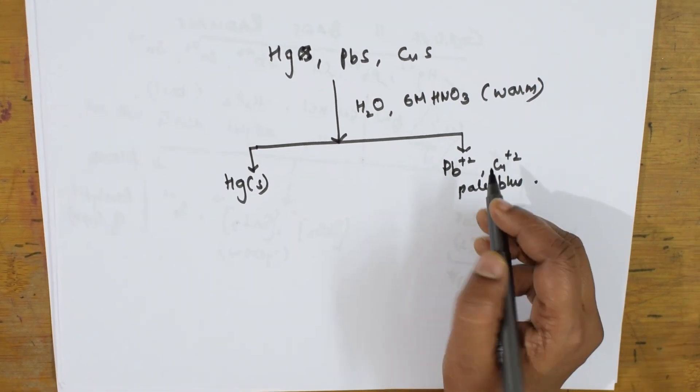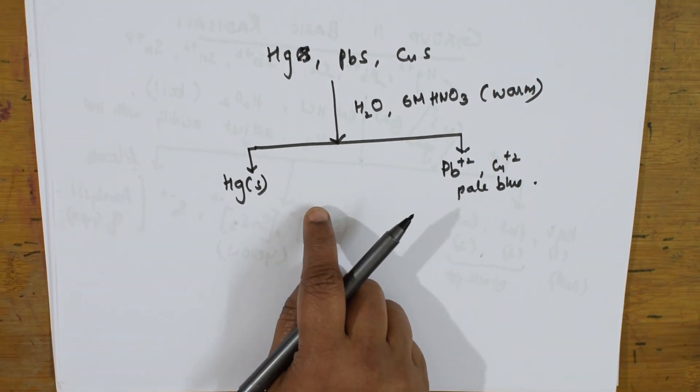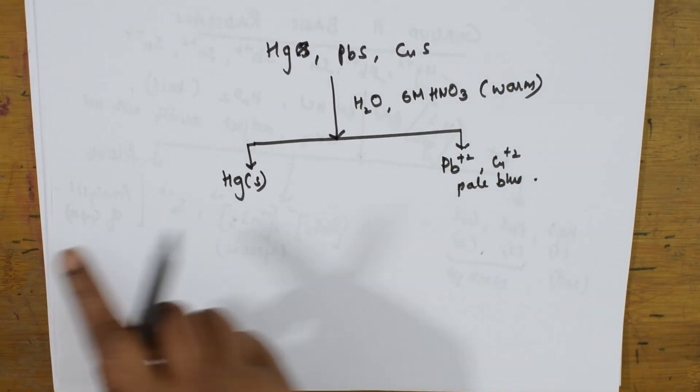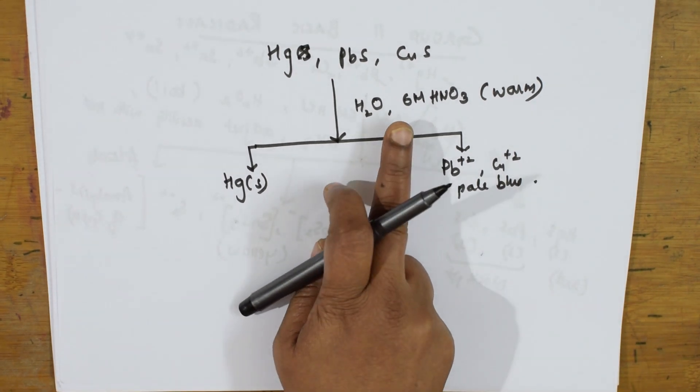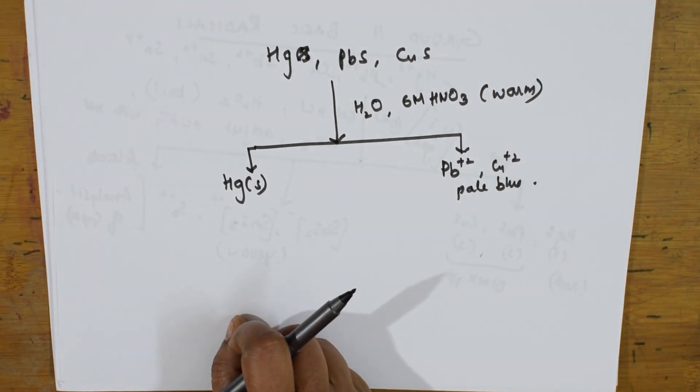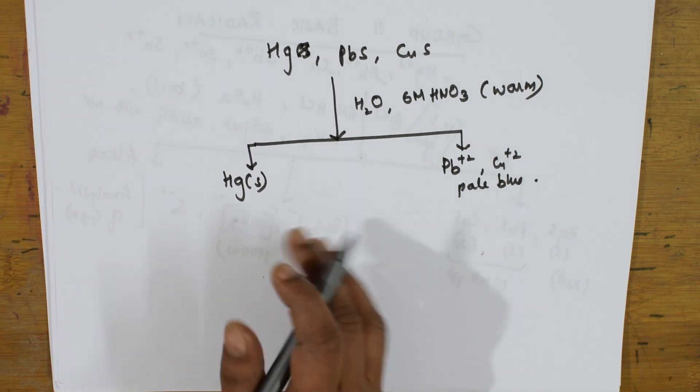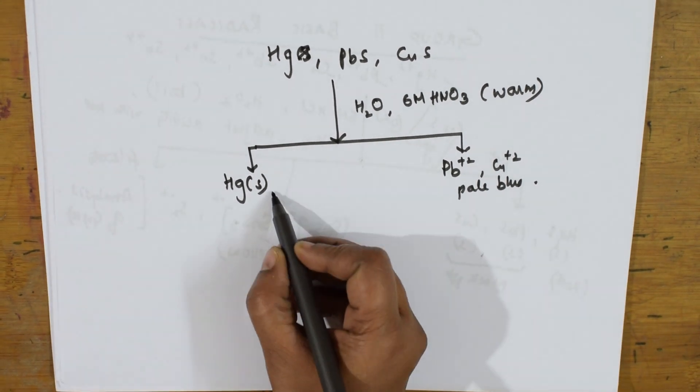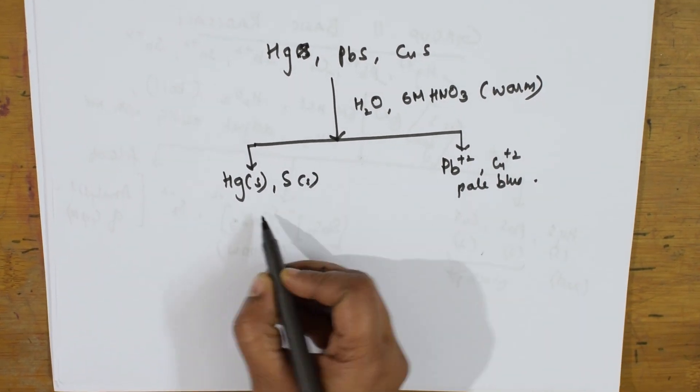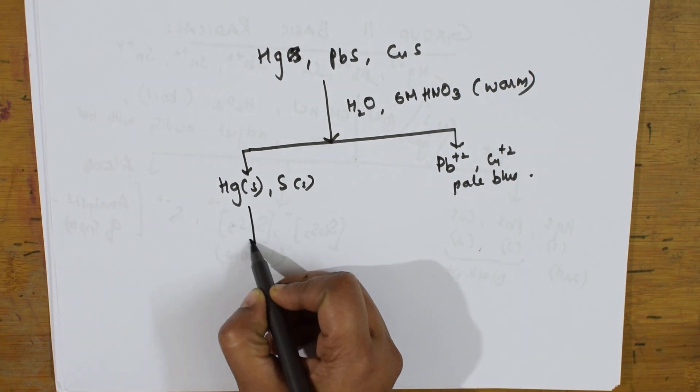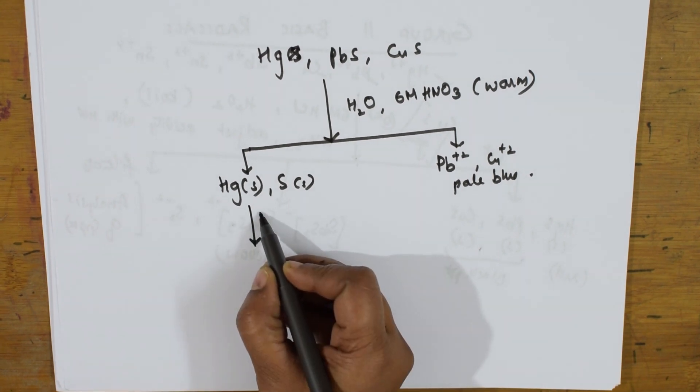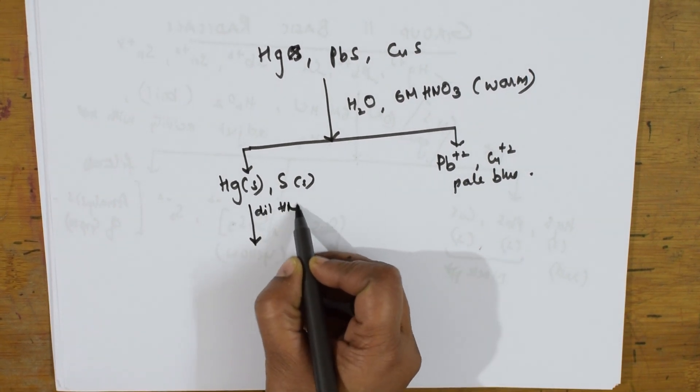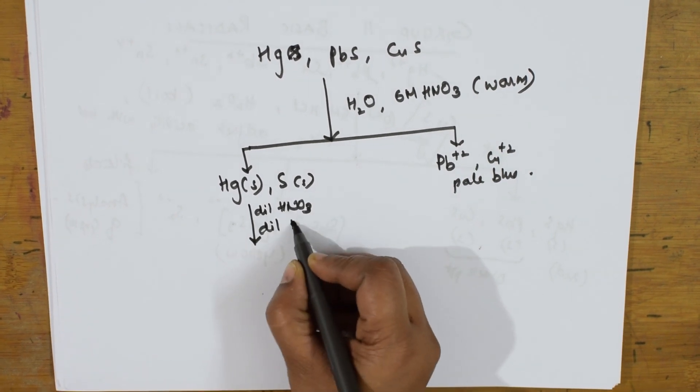This is procedure 1 which we did. Let us take this as procedure 2 which I already did in the earlier page. Let us take this as procedure 3. To this Hg, you'll be getting sulfide also. This will be dealing with dilute HNO₃ and dilute HCl.